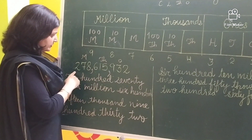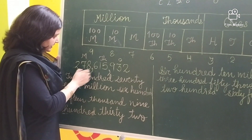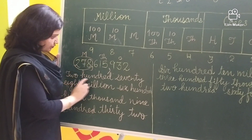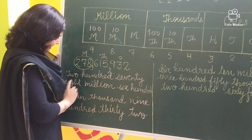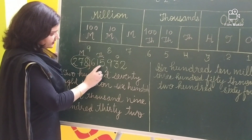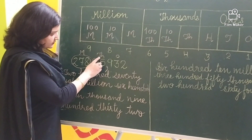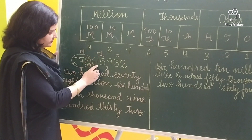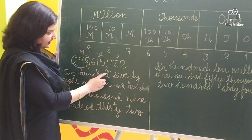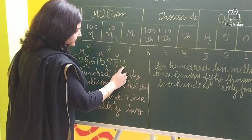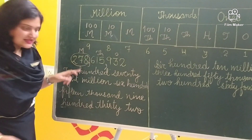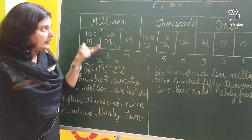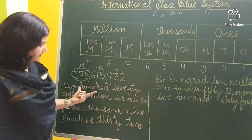So the number name of this numeral is: first group the number — 278 million, 615 thousand, as 615 belongs to the thousands period, so 615 thousand — and then 932. So this is the number name of this numeral following the international place value system.